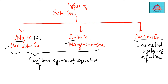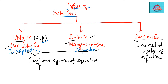A unique solution is an ordered pair (x, y) — one solution, and this is called an independent system. If it has infinite or many solutions it is called a dependent system. This is like a flowchart summary of the lesson. In today's video you will look at one solution; in parts 2 and 3 you will look at infinite and no solution.